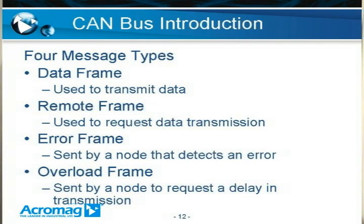There are four message types defined in the CAN bus: the data frame, remote frame, error frame, and overload frame. Almost all information is sent using the data frame, which a transmitter uses when broadcasting a message. The remote frame is infrequently used and is sent by a transmitter requesting another device to transmit data. The error frame is sent by any node that detects an error in a message. The overload frame is sent by a receiver to notify a sender that it is not ready to receive additional data.